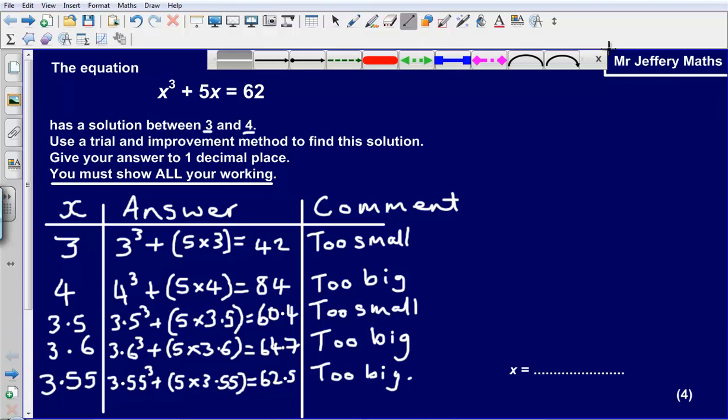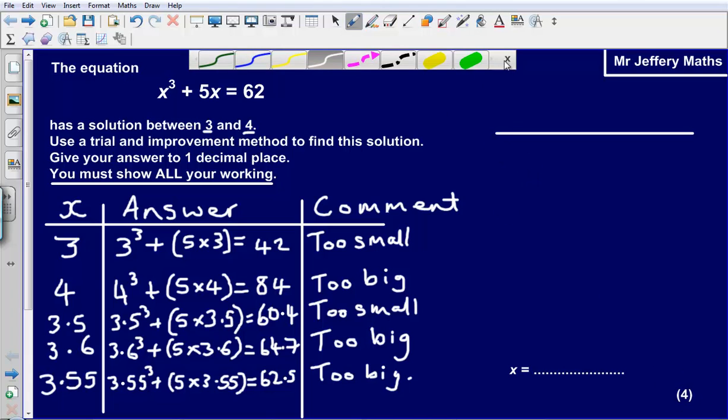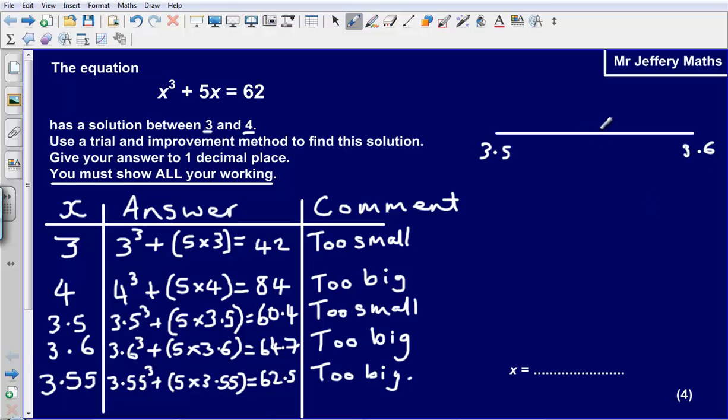Now you may be wondering why have I done 3.55 when I only need to give my answer to one decimal place. Well by doing this it helps me to decide which of these to choose. And it is an important stage in getting full marks on this question. So what I could say is that if I just draw out a quick number line. And if I look I can say that this here is 3.5. This here is my 3.6. And then halfway along there is my 3.55.